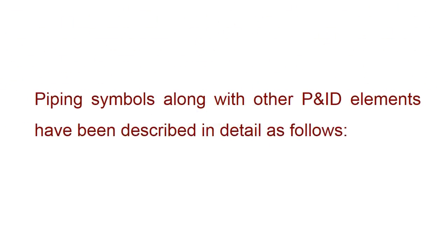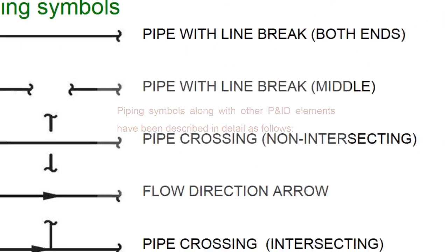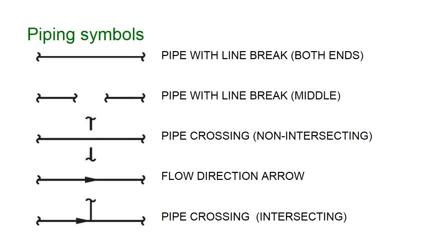Piping symbols along with other P&ID elements are described in detail as follows. Piping symbols include: pipe with line break at both ends, pipe with line break in the middle, pipe crossing non-intersecting, flow direction arrow, and pipe crossing intersecting.